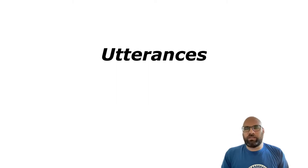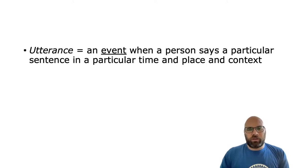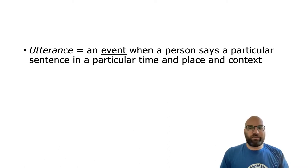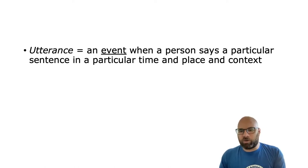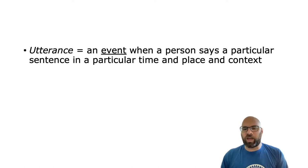The other reason is that even if you say the same sentence at a different time, place, or context, it might mean different things. So we use the term 'utterance' to refer to any event when a person says a sentence in a certain context, time, and place. For example, if I say 'there's a cat on the chair' today at 12 o'clock, that's one utterance. If you say the same sentence tomorrow at 3 o'clock in a different place, that's another utterance — same sentence, different event, different person, different time and place.